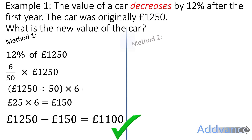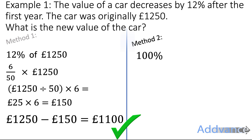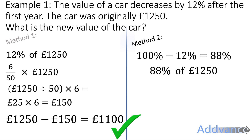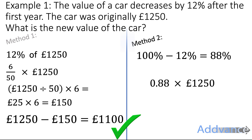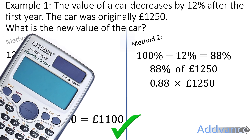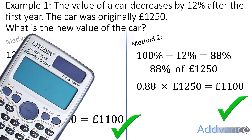I'm going to show you a slightly quicker method where we start with 100% and take away 12%. 100 − 12% is 88%, and 88% of 1250 will get us straight to the correct answer. 88% is the same as 0.88, so to enter this into our calculator we use 0.88 as the multiplier. 0.88 × 1250 gives us £1,100 — the correct answer — but method two is slightly quicker.